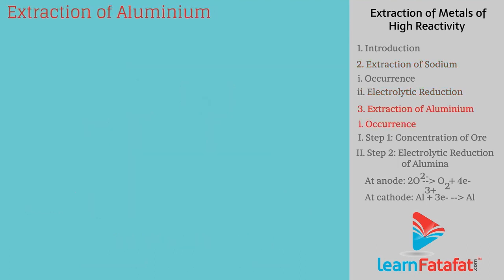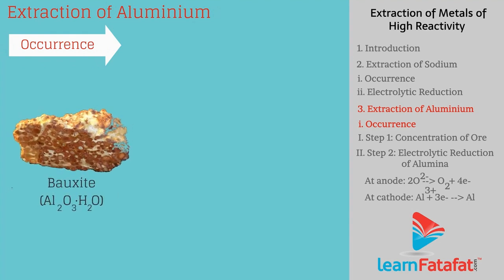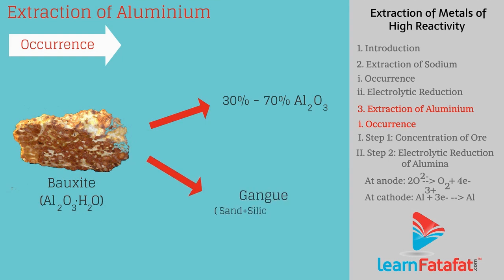Extraction of aluminium — Occurrence. Aluminium, being a reactive metal, occurs in combined form, that is, in the form of bauxite. Bauxite ore contains 30 to 70% Al₂O₃, and the remaining portion contains gangue made of sand, silica, and iron oxide. Extraction of aluminium takes place in two steps.